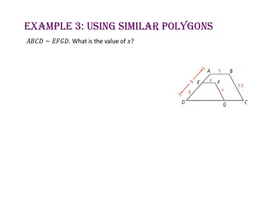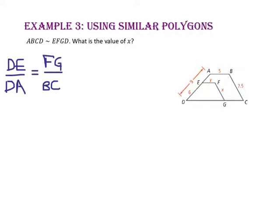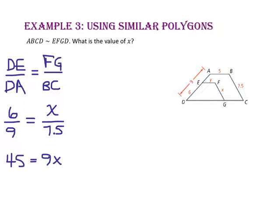In example 3, we will use similar polygons. Polygon ABCD is similar to polygon EFGD. What is the value of X? Since corresponding sides of similar polygons are proportional, we write the ratio of side DE to side DA equal to side FG to BC. Substituting the corresponding lengths gives 6 to 9 equals X to 7.5. Using the cross product property, we get 45 equals 9X. Dividing both sides by 9, X equals 5.